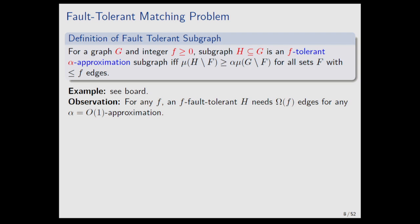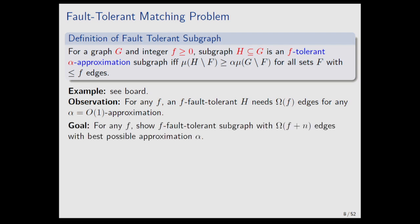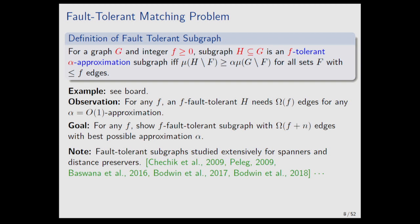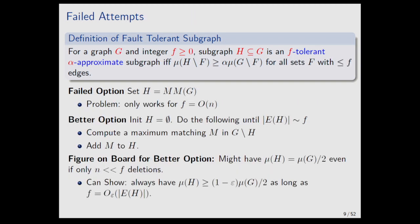If you want to support F faults, you really need omega F edges — otherwise the adversary could just delete all the edges in your subgraph and you're left with nothing. So we're going to focus on the most robust possible case. My goal is to show that for any F — think of F here as large, bigger than N — you can achieve something with basically the optimal number of edges, just a fraction more than the number of faults.